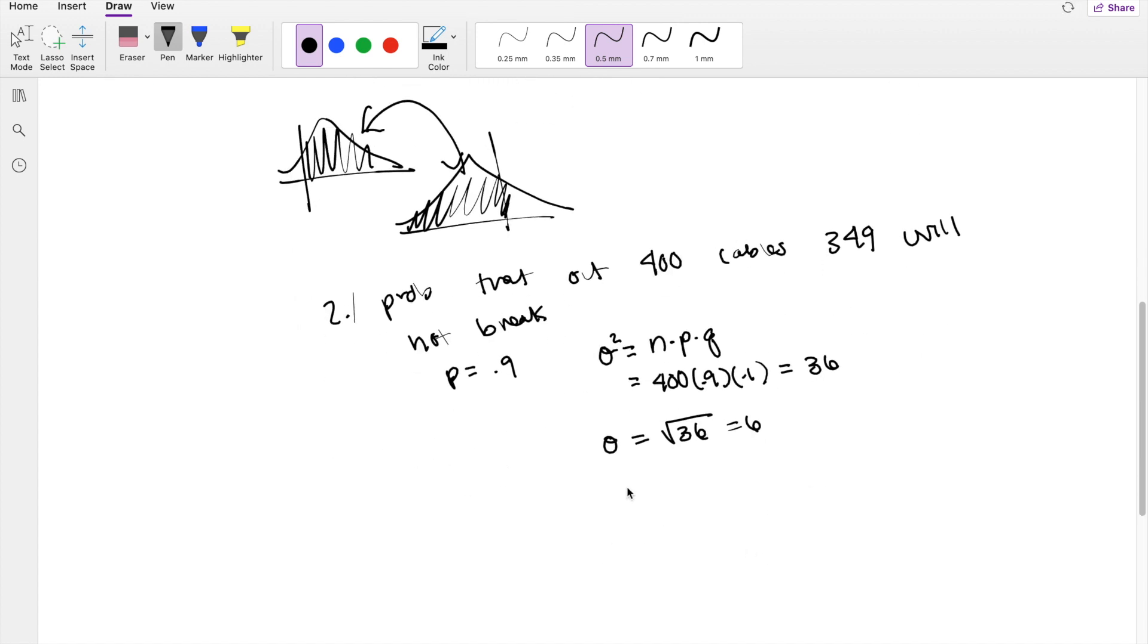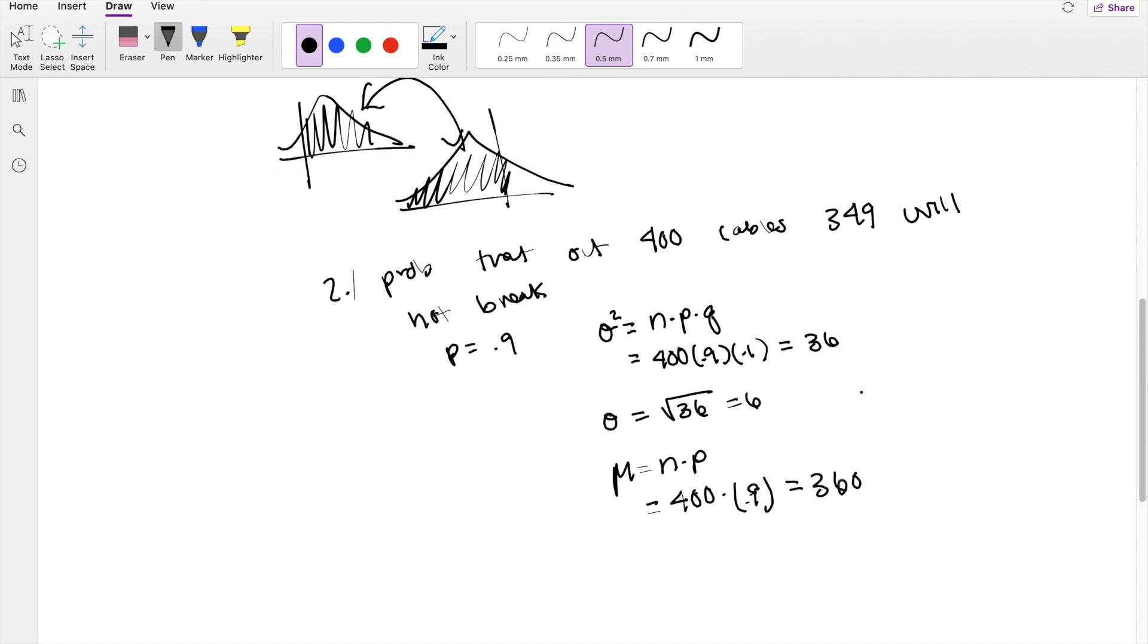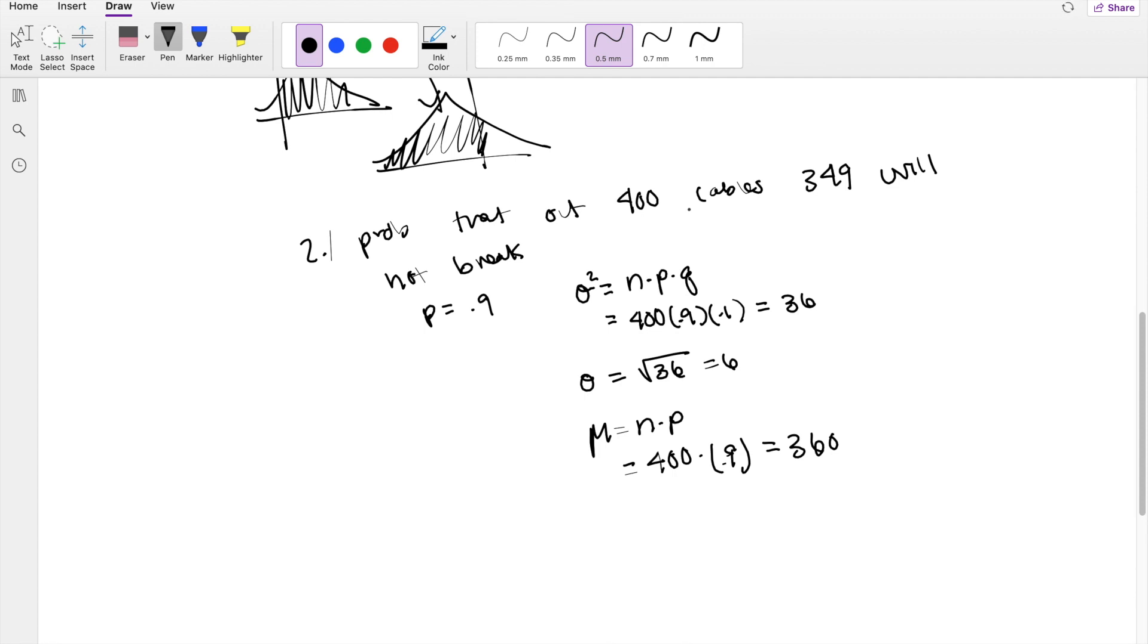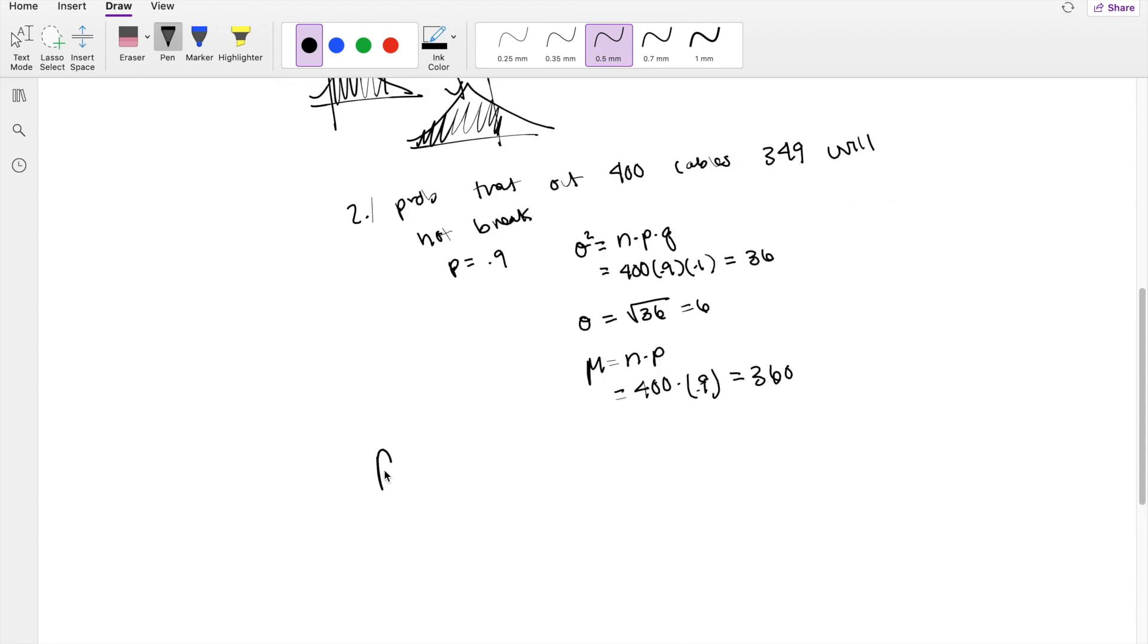So then standard deviation is just square root of 36, which equals 6. We also need the mean. The mean equals n times probability, where the probability is 0.9. So this equals 360. Alright, so then we can figure out the probability that out of 400, what's the probability that x is 349 or greater? At least 349.